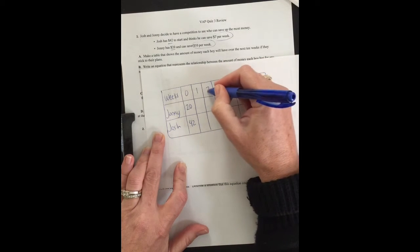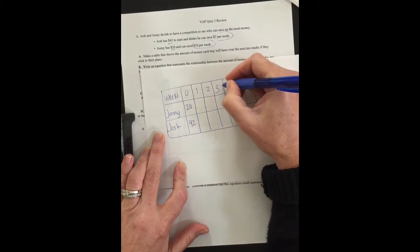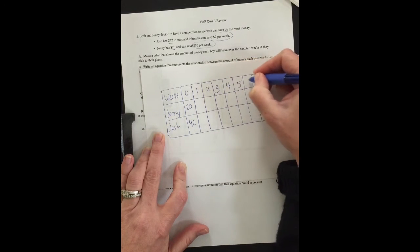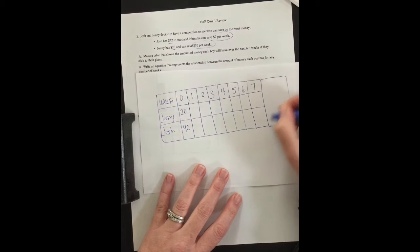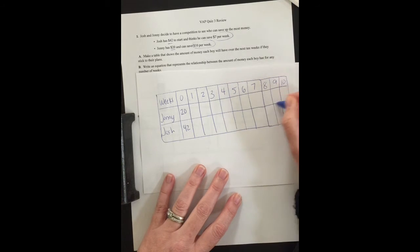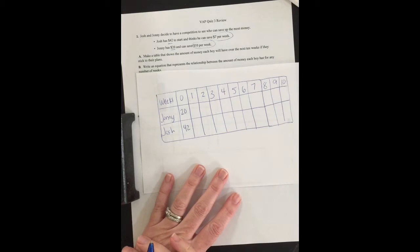So now I'm going to have to separate each of these into the weeks: one, two, three, four, five, six, seven, eight, nine, and ten. Alright, so now I have all my 10 weeks.